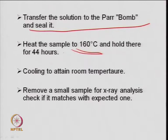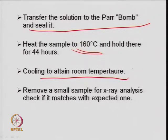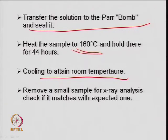Check the type of resultant product at different time intervals. Then cool it - at this stage the gel has formed: the 4-member ring, 6-member ring primary building blocks have formed and crystallization has started. Remove a sample for X-ray analysis and check if it matches the expected phase. After different time intervals, check through XRD whether the expected phase of zeolite has formed or not, and optimize the process conditions for hydrothermal synthesis.